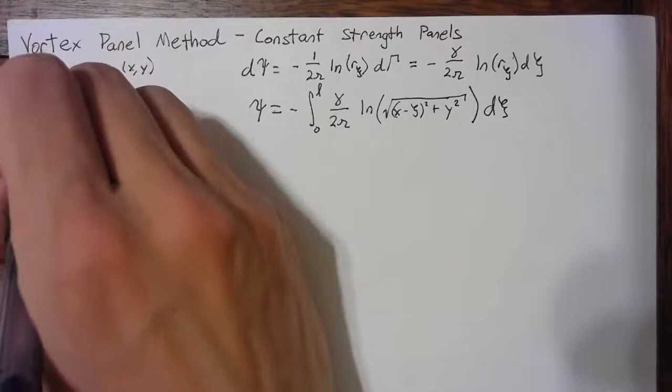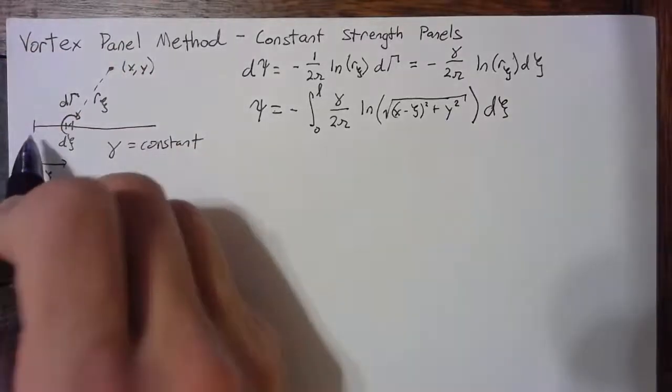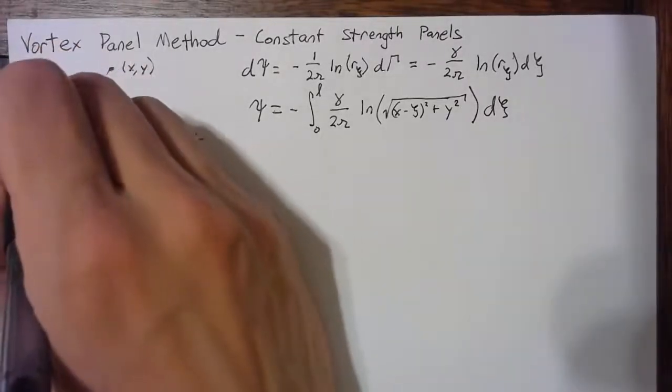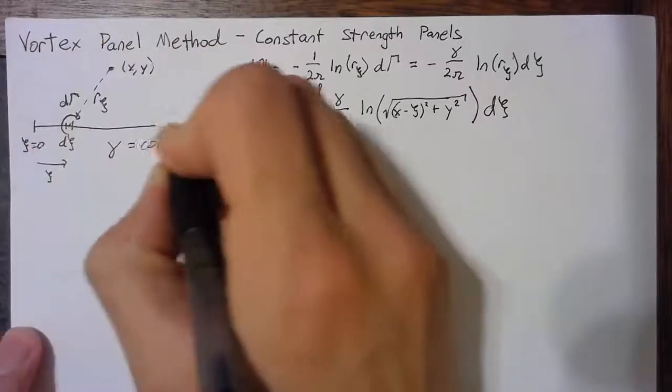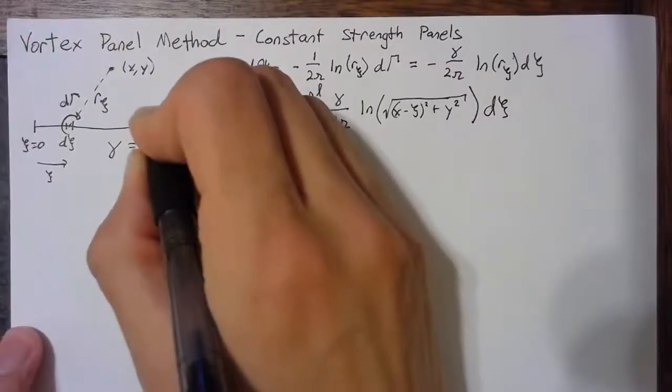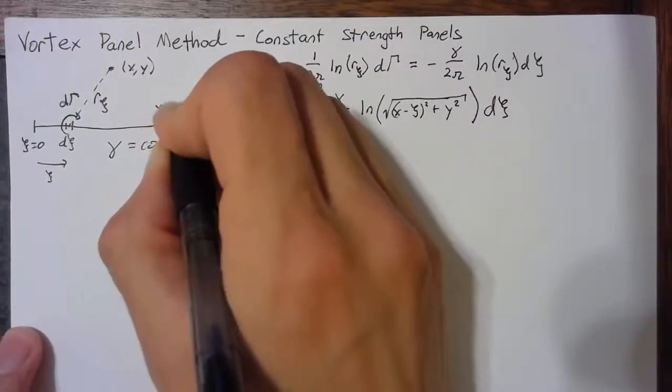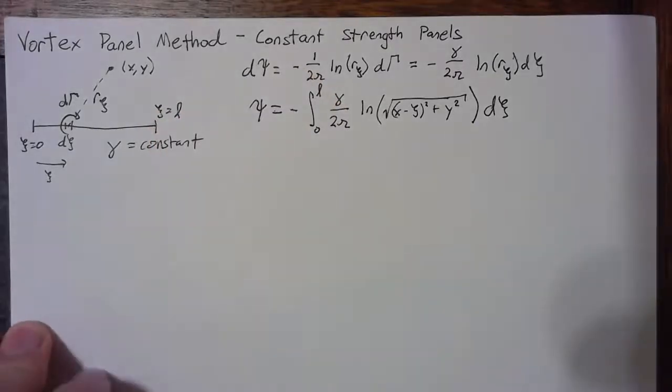This point at the left end of the panel is going to be where xi is equal to 0, and this point over here will be xi is equal to this lowercase L, which is the length of our panel.